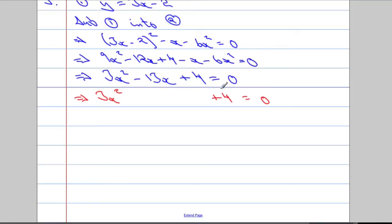3 times 4 is 12. So numbers that multiply to the 12 but add to negative 13, minus 12, minus 1. Perfect. So instead of writing this as, I'm going to write this part of the expression.